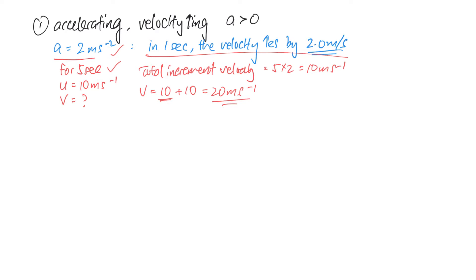Now applying the formula: a = (v − u) / t. The acceleration is positive 2, the final speed v is what we want to find, the initial speed u is 10, and the time taken is 5 seconds. Solving this gives a final speed of 20 meters per second.